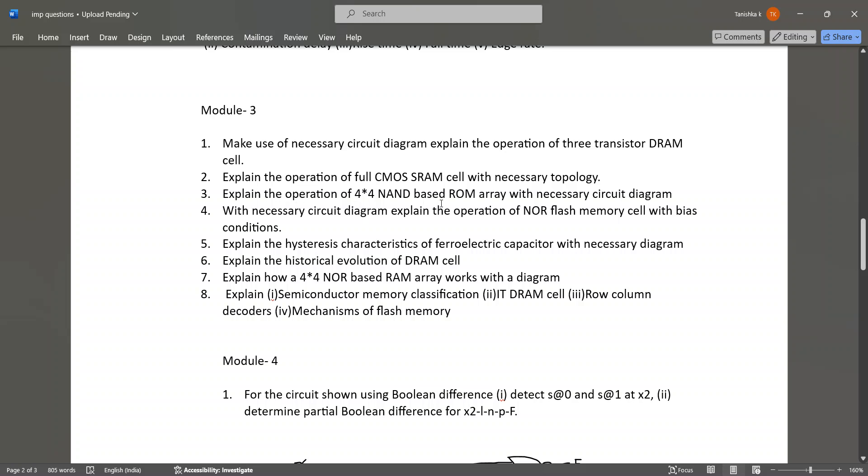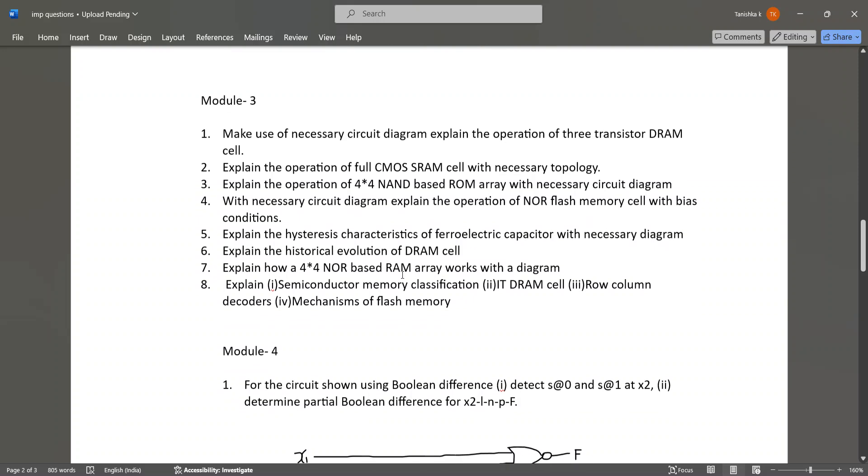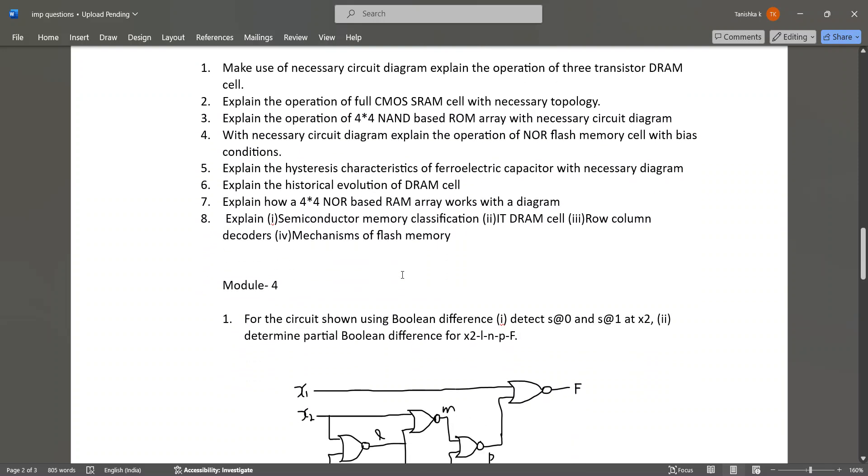With necessary circuit diagram explain the operation of NOR flash memory cells with bias conditions. Explain hysteresis characteristic of ferroelectric capacitor with necessary diagram. Explain the historical evolution of DRAM cell. Explain how a 4x4 NOR-based RAM array works with diagram and explain semiconductor memory classification, 1T DRAM cell, row column decoders, and mechanism of flash memory.